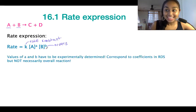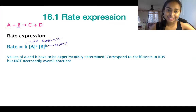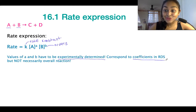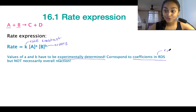The orders of the reaction have to be experimentally determined — that's where we get that information from. They do, however, correspond to the coefficients in the rate determining step. That's what RDS stands for: the rate determining step.